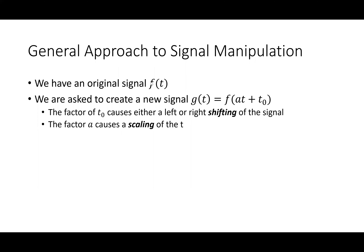We talk about signal manipulation. If I have a signal F of T and I'm making a new signal from it, F of AT plus T naught. T naught causes a shift to the left or right, and A causes the scaling of the T axis.